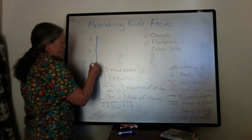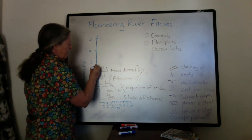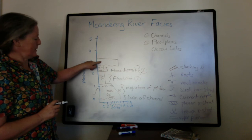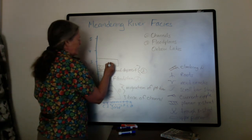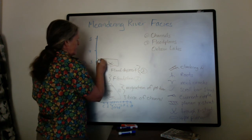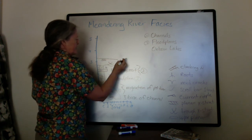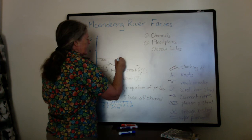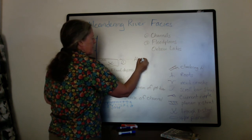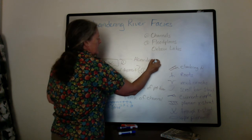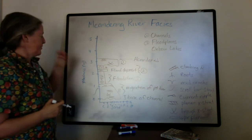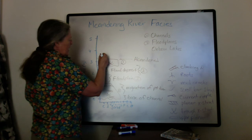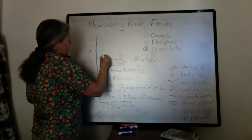Then maybe we have another channel migrating through, and say that this part of the channel is abandoned. We have the lower part of the channel with trough cross-stratification and maybe a little planar lamination. But then the channel is abandoned due to the merging of two meanders, so you end up with an oxbow lake forming right above it.